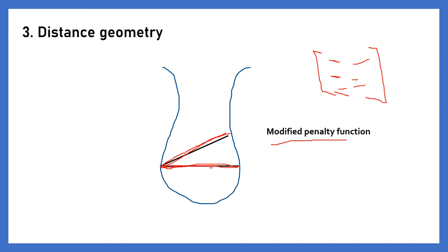The distance matrix is used to generate a number of conformers binding within the binding site, and a set of force constants between the postulated site points and ligand points predicts the affinities of the compounds when bound in the optimal manner. A modified penalty function is used so that the ligand remains within the binding site — when you are changing the conformation of the ligand, the ligand may try to come out of the binding site, so the modified penalty function acts as the restraint to keep it in place.